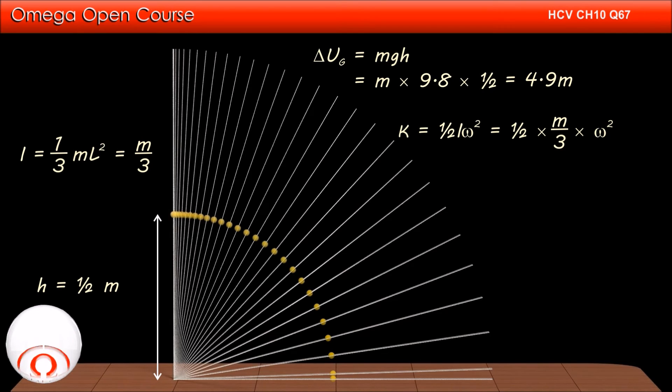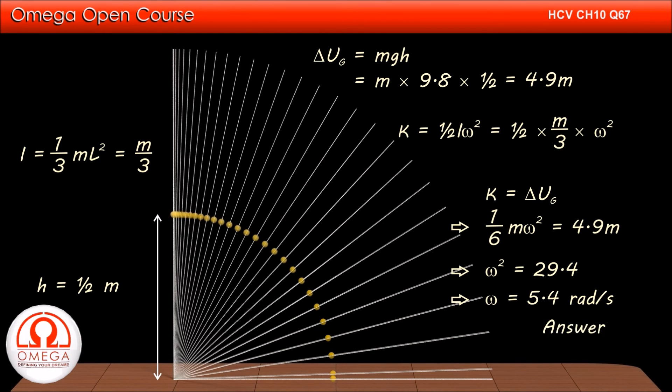The rotational kinetic energy must be equal to the decrease in gravitational potential energy of the rod. Or 1 by 6 m into omega square must be equal to 4.9m. This implies omega square is equal to 29.4, or omega is equal to 5.4 radian per second. This is our answer.